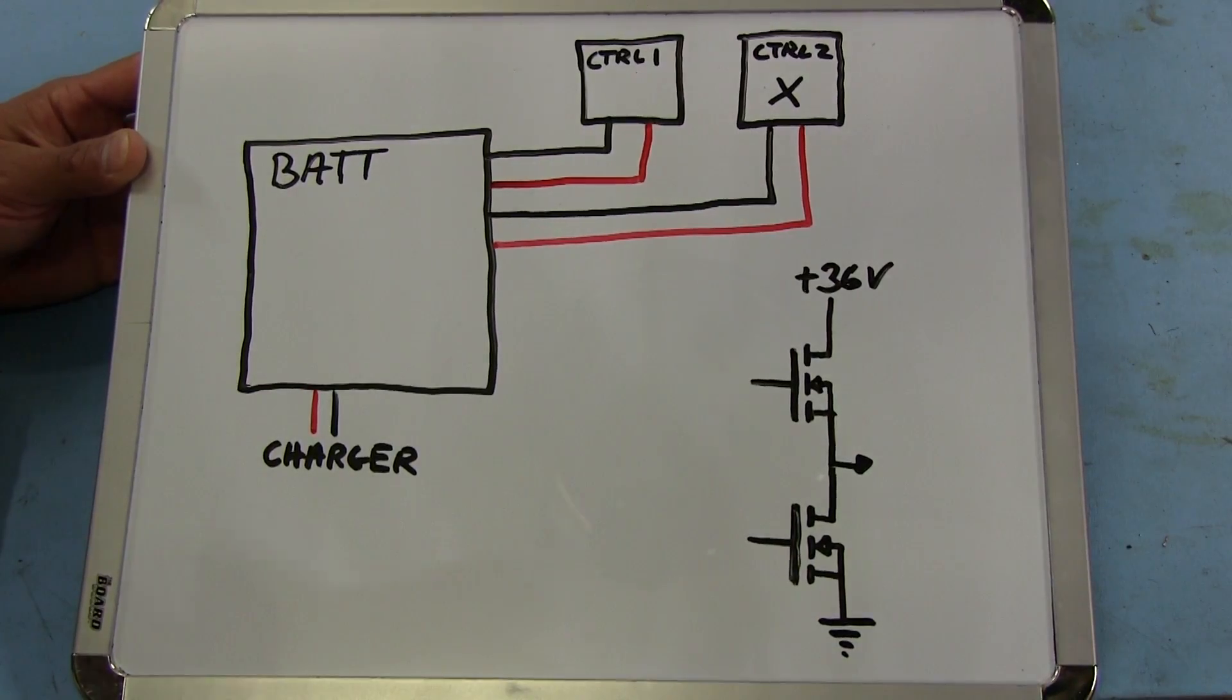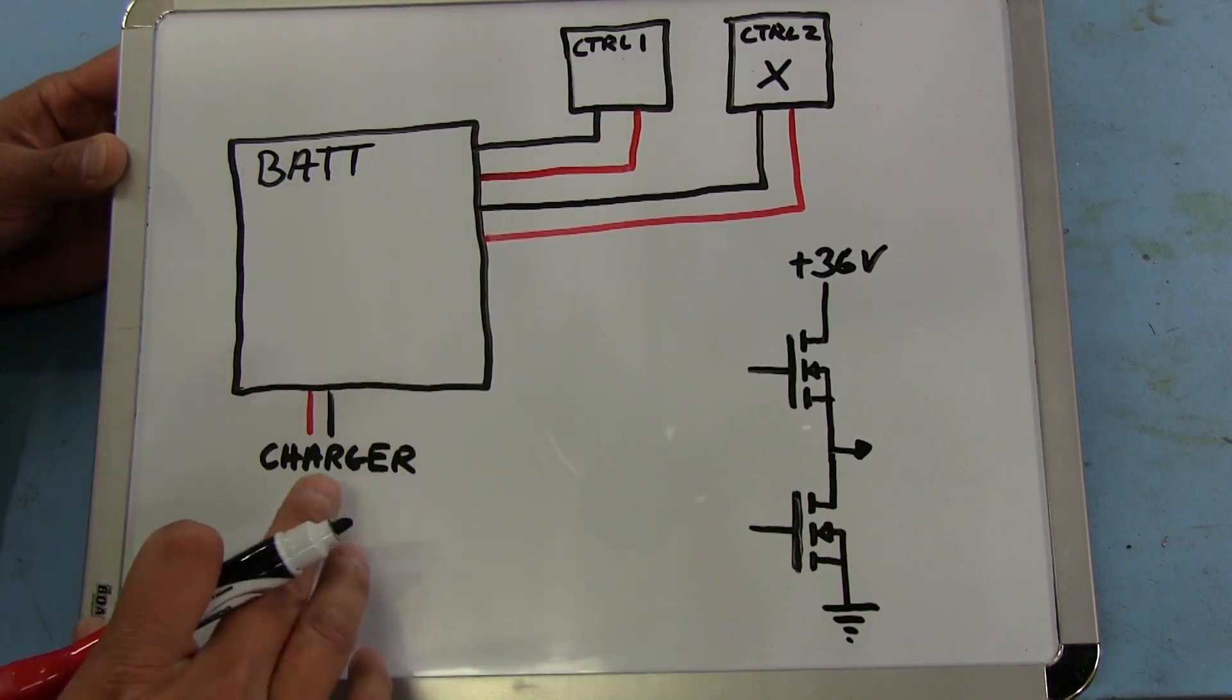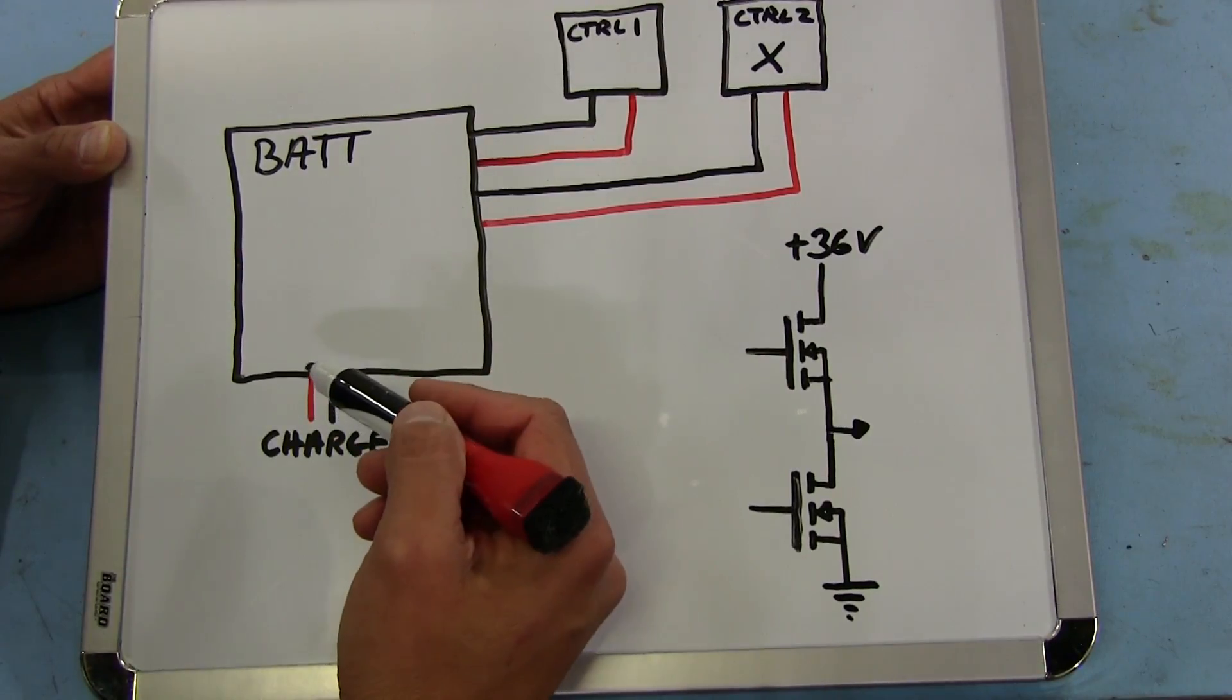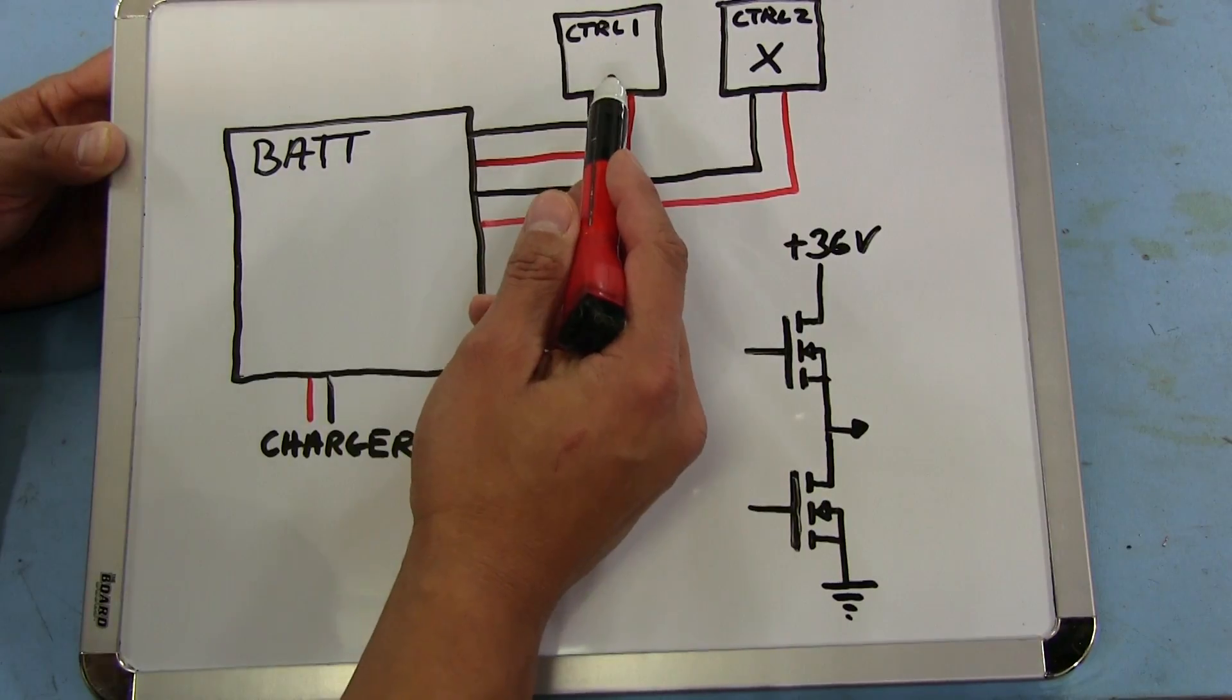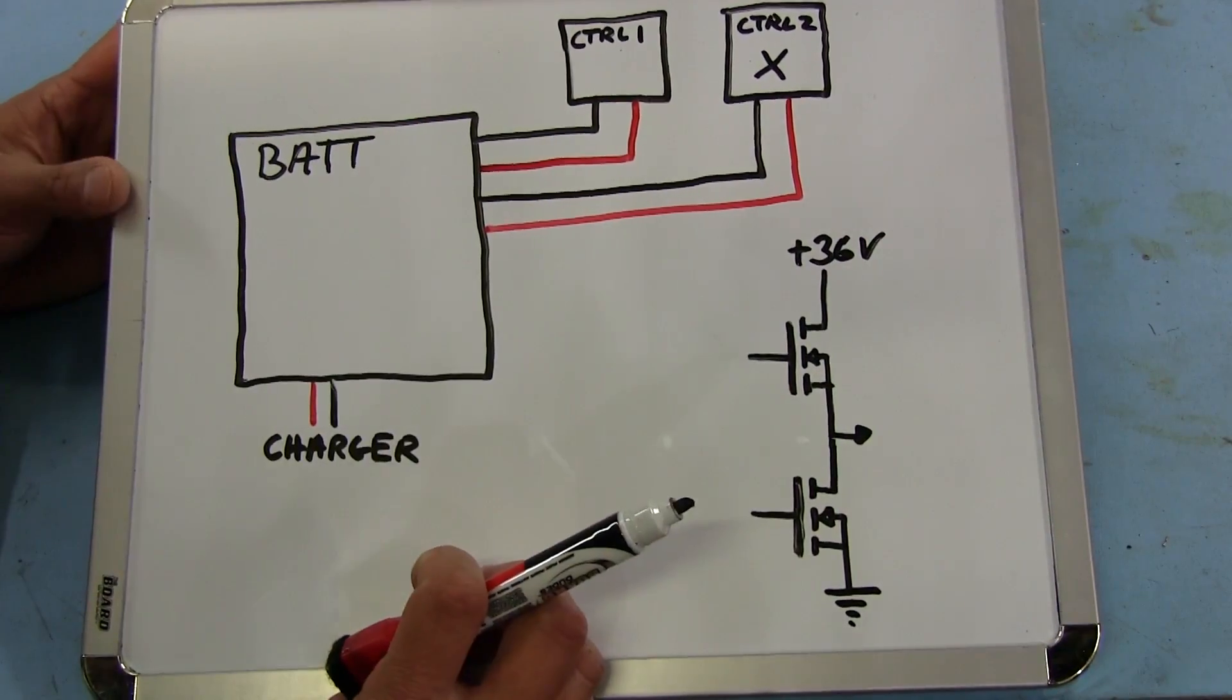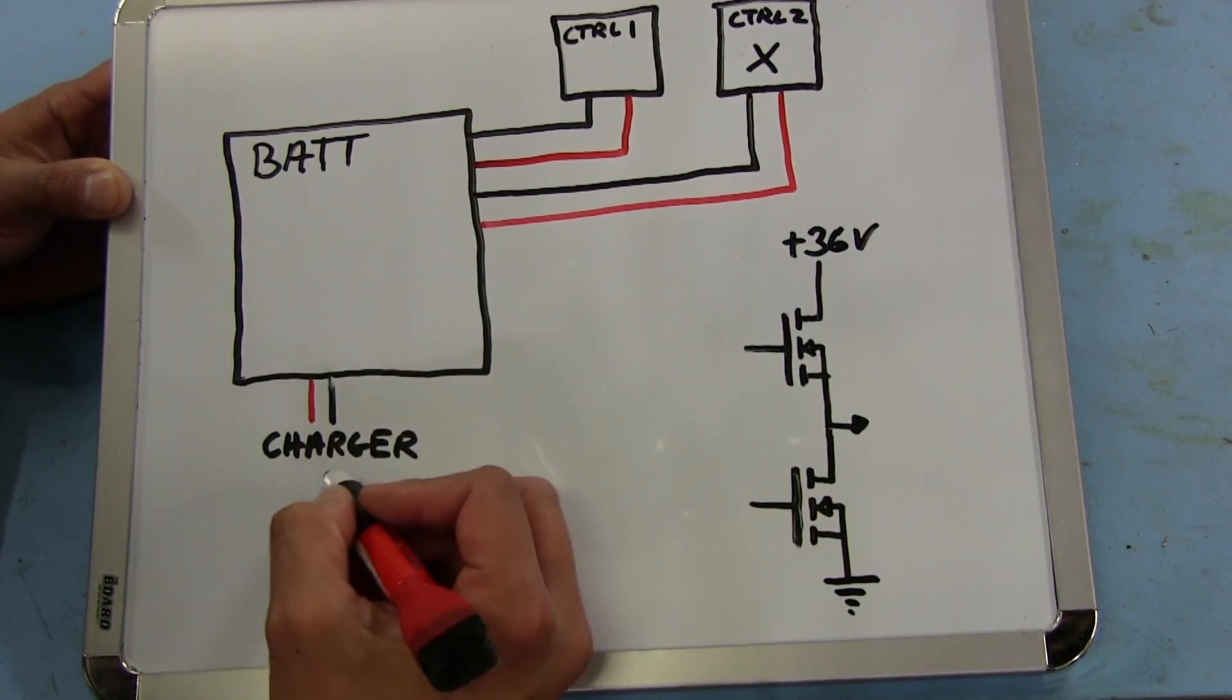Okay, so first a quick reminder of how everything was wired up. The input from the charger, the connector on the base of the hoverboard, went straight into the battery. Then I had two outputs, the only wiring that came out of that battery. One set going to controller one and the other set going to controller two. We'll say controller two is the bad one, even though it could have been either.